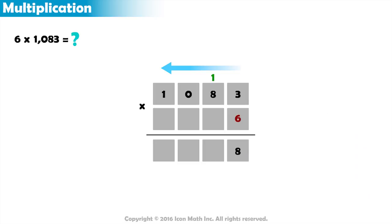Next, 6 multiplied by 8 gives us 48, plus the 1 in the carry equals 49. We put the 9 in the tens place and carry 4 to the hundreds place.